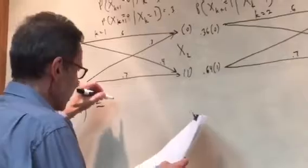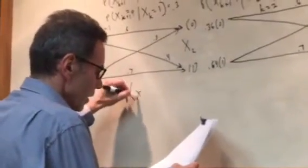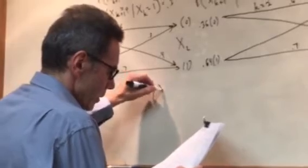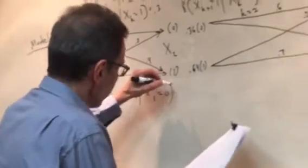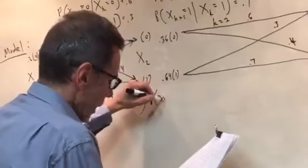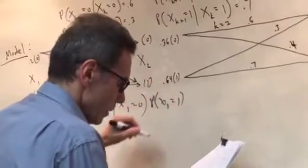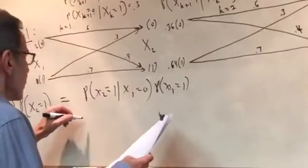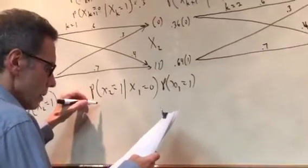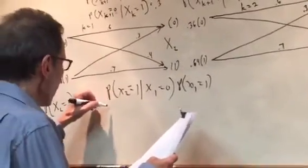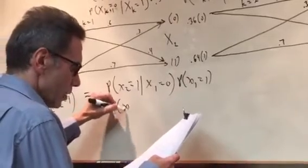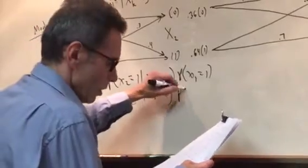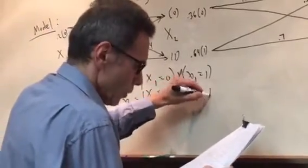Again, the probability of x2 equals one. Given x1 equals zero, which means x2 equals zero, times probability of x1 equals zero, times 0.4 times 0.3 times 0.4 times 0.1. Plus 0.4 times 0.2 times 0.1 times 0.4 times 0.7 times 0.1.